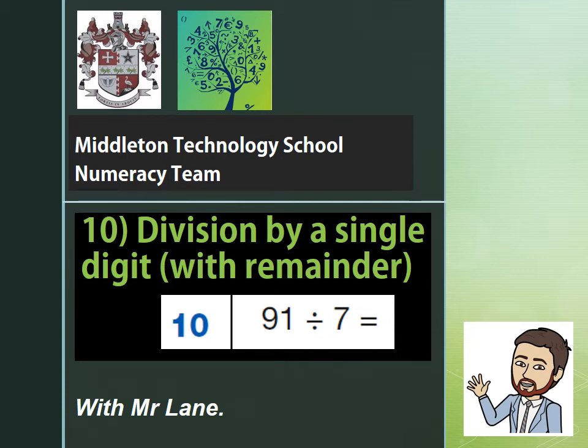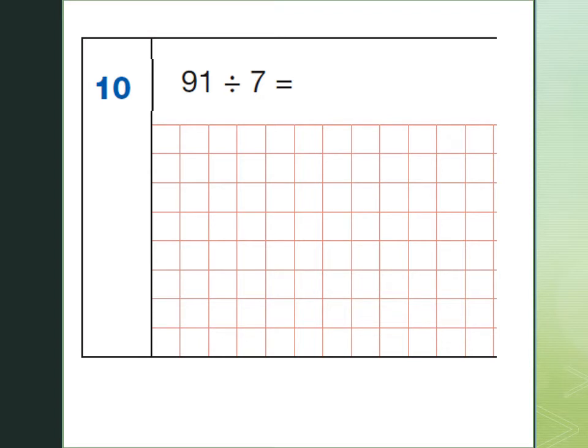This video is all about division by single digits, but this time we're going to have a remainder, and the single digit is 7 in this case. So, question 10 from the arithmetic paper: 91 divided by 7.